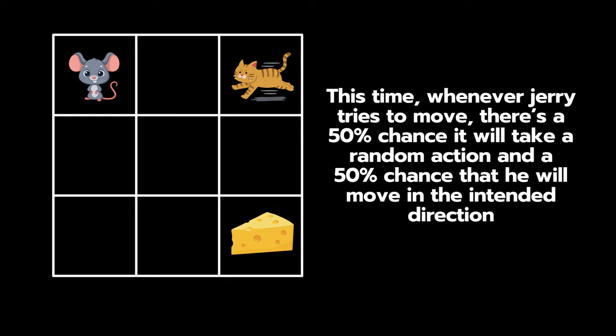Now whenever Jerry takes an action, he only has a 50% chance of moving in the intended direction. The other 50% of the time, he will move to a random direction.